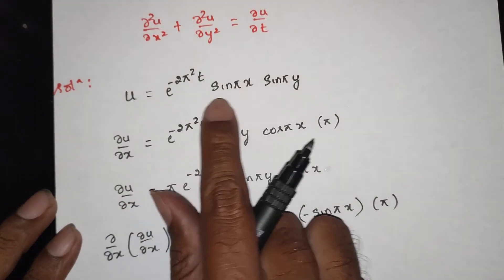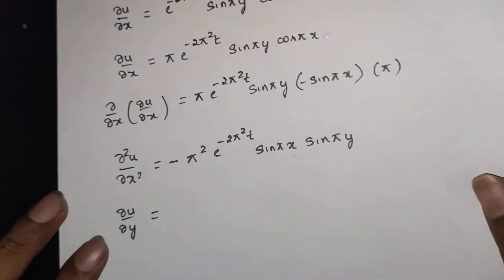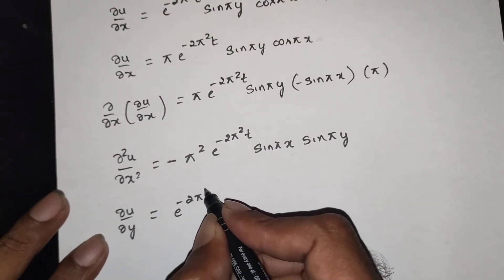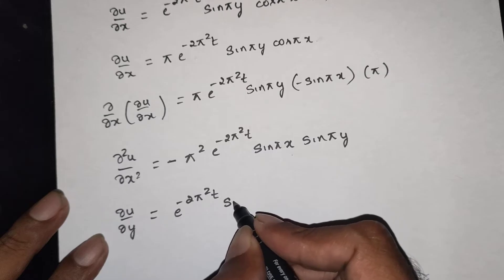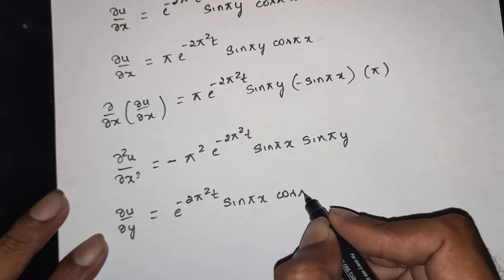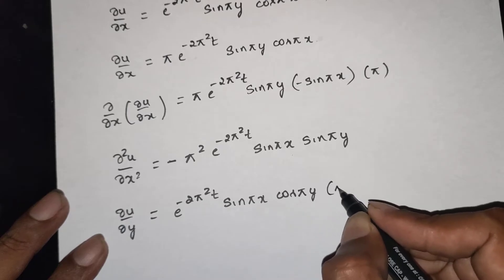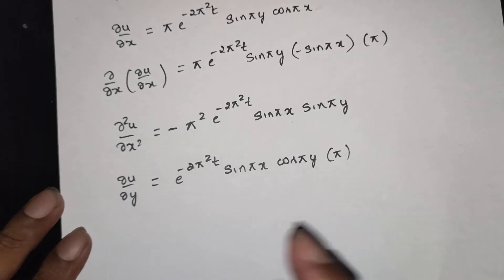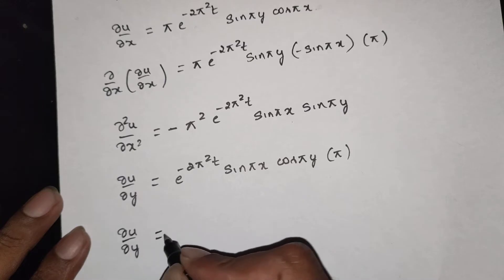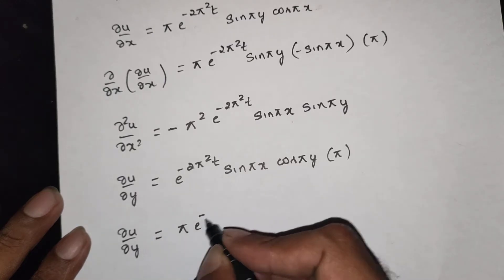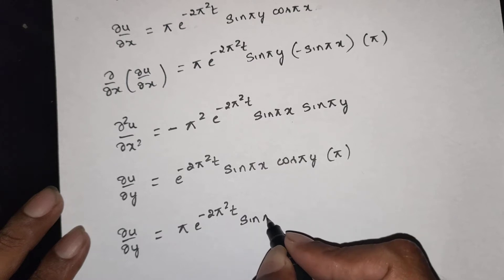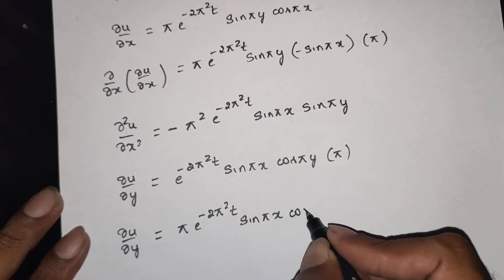Now find dou u by dou y. Differentiating u with respect to y, the t function and x function are constant. sin(pi y) differentiates to cos(pi y) into pi. So dou u by dou y is equal to pi into e power minus 2pi squared t, sin(pi x) into cos(pi y).